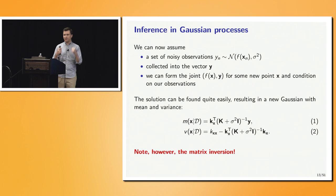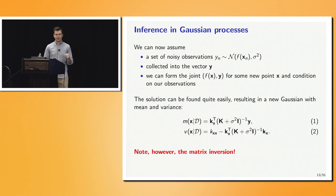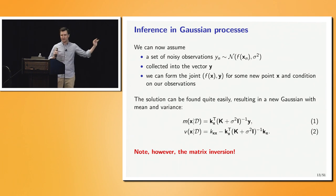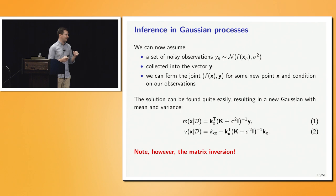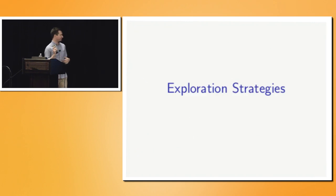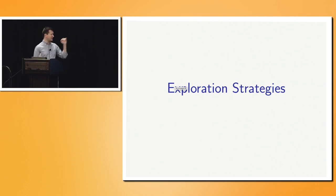In settings where function evaluations are very expensive — like chemistry experiments taking 10 minutes to hours or days — this matrix inversion won't matter. But once function evaluations become less costly, that's when you'll want to seriously consider replacing the GP with a lighter model.